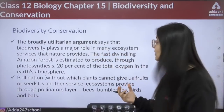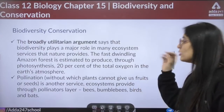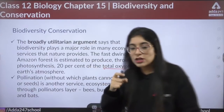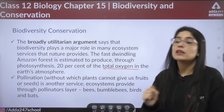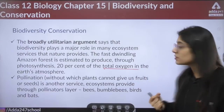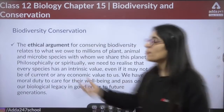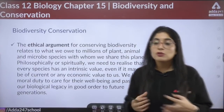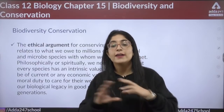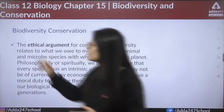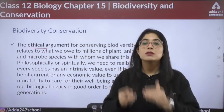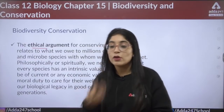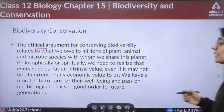Broadly utilitarian arguments take a long-term view — biodiversity plays a major role in many ecosystem services that nature provides. For example, the fast-dwindling Amazon forest is estimated to produce 20 percent of total oxygen. Pollination is another important ecosystem service. Lastly, ethical arguments suggest we owe many things to plants and nature — there is always a give-and-take relationship. It is our duty to conserve the biological legacy for future generations.